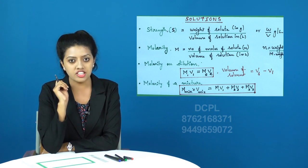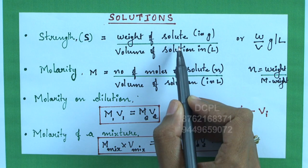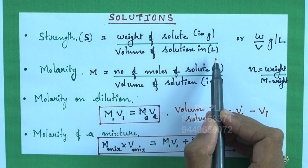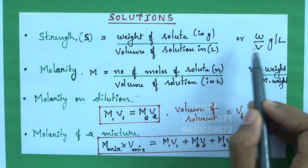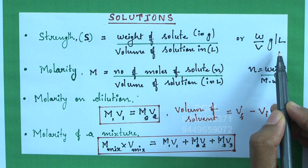One more expression is the strength which is given as S, which is equal to weight of solute in grams divided by volume of solution in liters, or it is simply written as W by V and the unit is gram per liter.